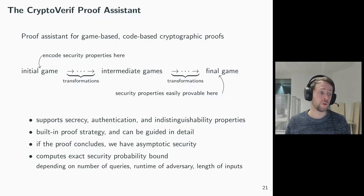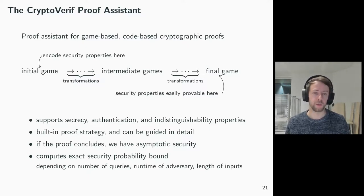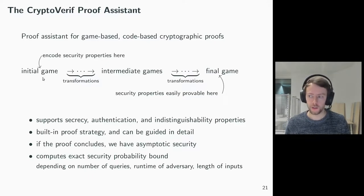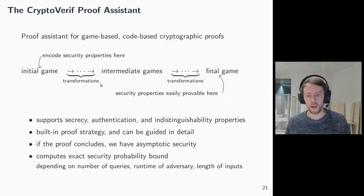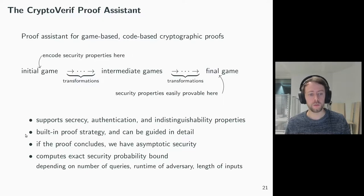Towards the end, a note on how we wrote our proofs. For most proofs, we use the proof assistant called CryptoVerif, which is developed at INRIA Paris. It is a proof assistant for game-based or code-based proofs. On a high level, you would express the initial security game in the programming language of CryptoVerif and then indicate the game transformations. CryptoVerif would apply them if it is sound and write the intermediate games for you. It can then finally prove security properties like secrecy, authentication, and indistinguishability properties. CryptoVerif has a built-in proof strategy to find suitable next transformations, and can also be guided in detail, which we did for this work.